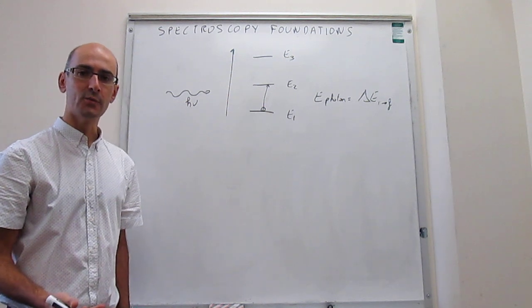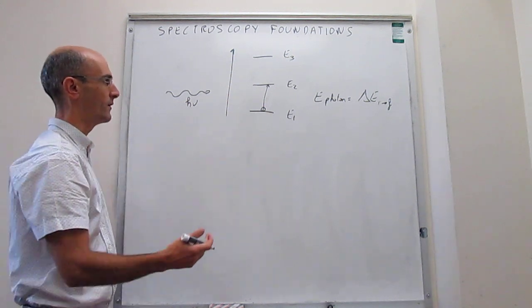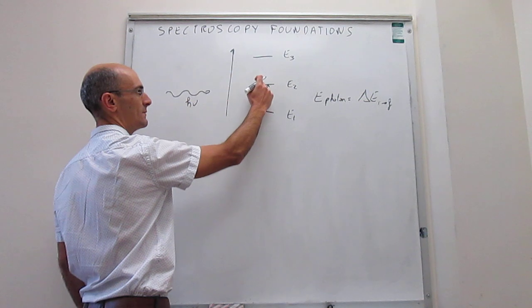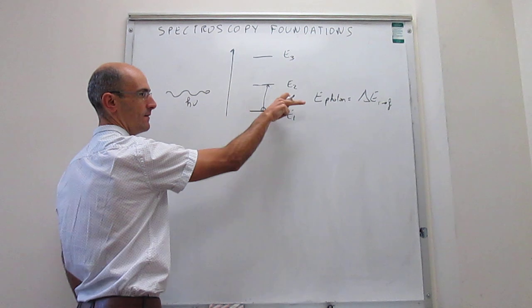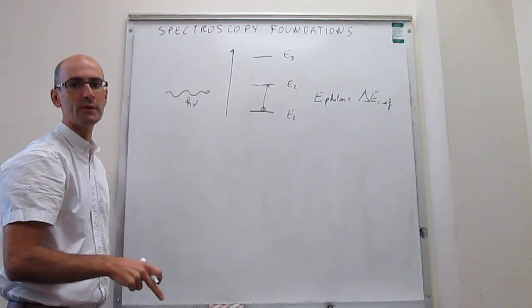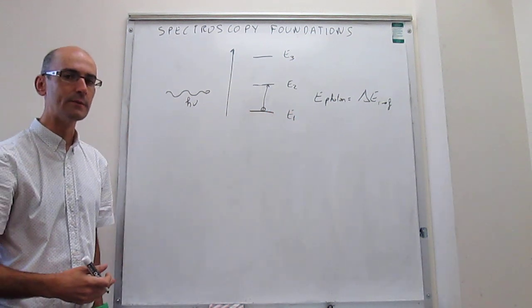In emission, you would essentially flip the problem. What happens is that you start with a system in the excited state, and then the system might go back to the ground state emitting a photon. So that would be emission, but it's far less common than absorption.